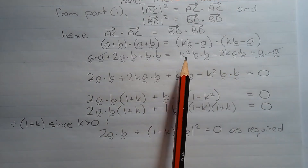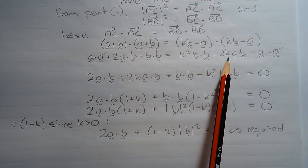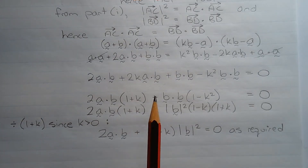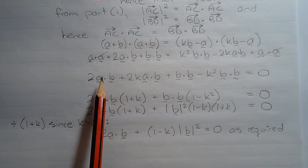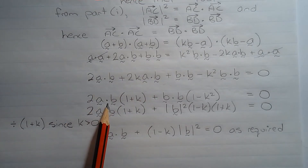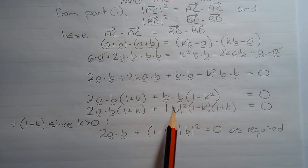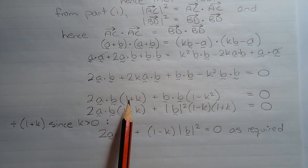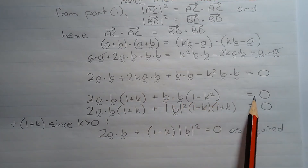The terms on the right-hand side — K squared times the dot product of vector b and vector b, and minus 2K times the dot product of vector a and vector b — are moved over to the left-hand side so that we end up with 0 on the right-hand side. The left-hand side can then be factorized by grouping in pairs: taking out 2 times the dot product of vector a and vector b from those two terms, and a common factor of the dot product of vector b and vector b from the other two terms. This gives 2(a·b)(1 + K) plus (b·b)(1 − K²) equals 0.